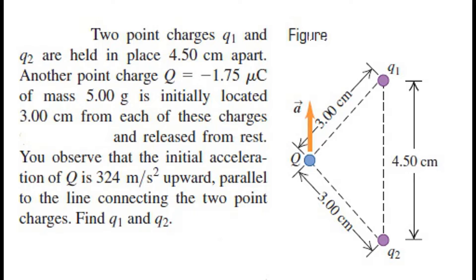Two point charges Q1 and Q2 are held in place 4.5 cm apart. Another point charge Q equals minus 1.75 microcoulombs of mass 5 grams is initially located 3 cm from each of these charges and released from rest. The initial acceleration of Q is 324 m/s² upward, parallel to the line connecting the two point charges. Find Q1 and Q2.